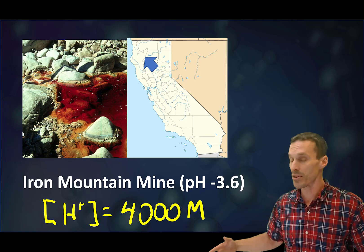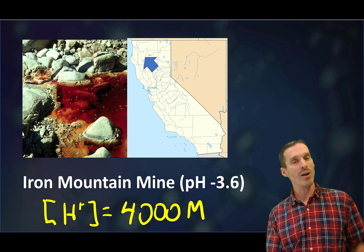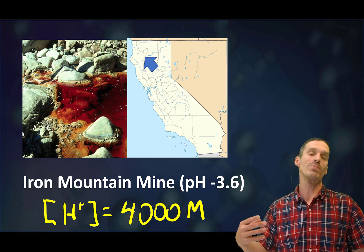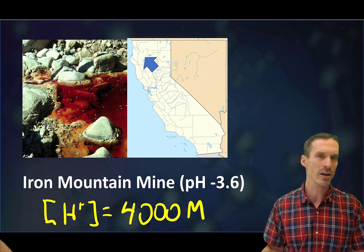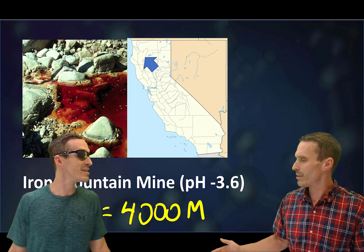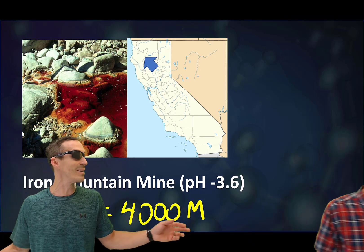To do the calculation there, we're talking about an H plus concentration of 4,000 molar, which obviously that's not the actual concentration. We are talking about activity, so it's more like the effective concentration to do with ionic strength. That doesn't even make sense, anyway.